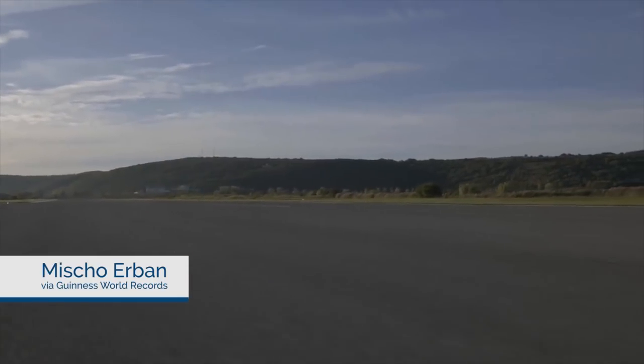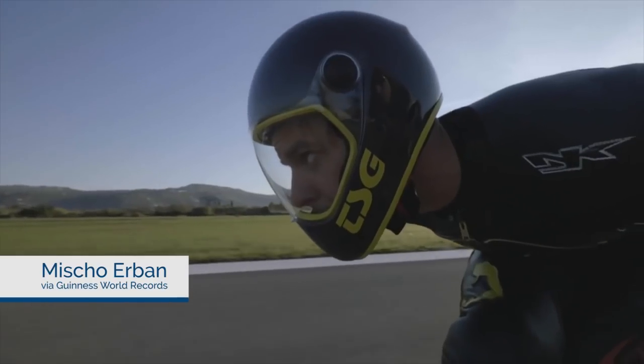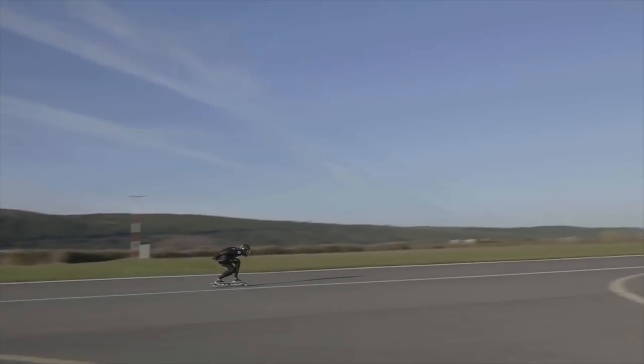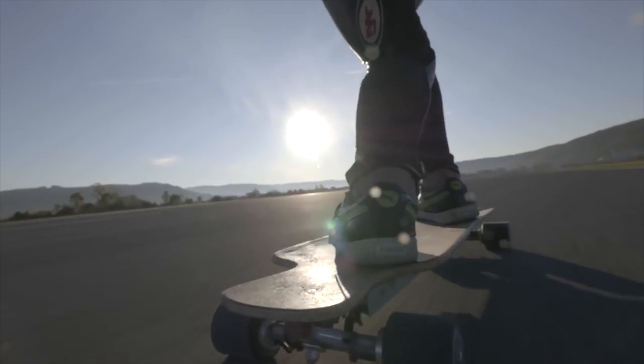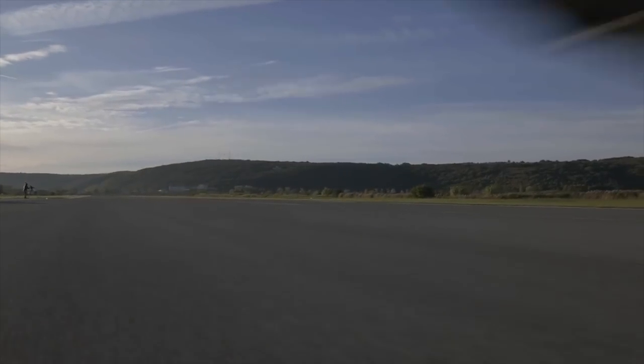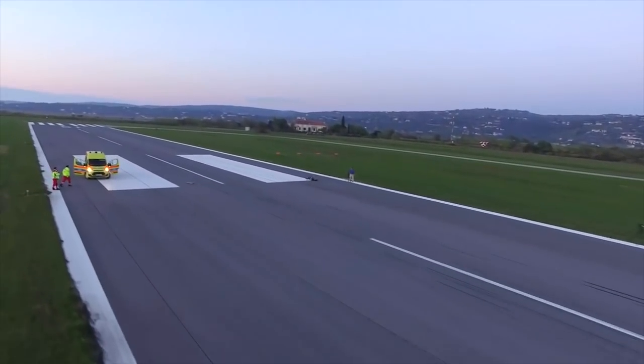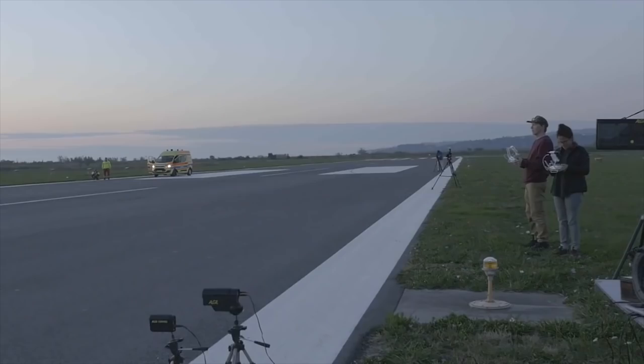First one I found was Micho Urban, and he hit a top speed of just under 60 miles an hour, or about 96 kilometers per hour. This was on a motorized skateboard. So that's pretty crazy, just on a flat ground going 60 miles an hour on a skateboard. Imagine speed wobbles or worrying about rocks and cracks and that kind of stuff. That's crazy fast.